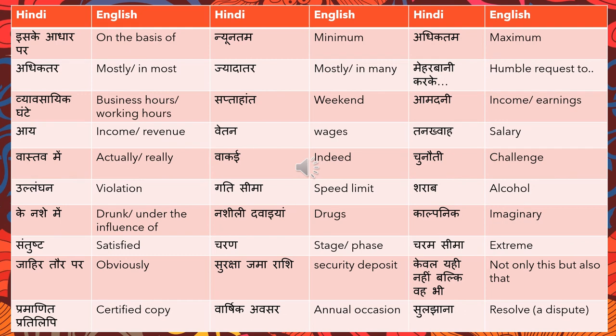Keval yehi nahi balki vahe bhi means not only this but also that. Pramanit pratilipi means certified copy — for example, for a loan they may ask: aapko apne passport ki ek pramanit pratilipi deni hogi, meaning you will have to submit a certified copy of your passport. Vaharshik means annual and avsar means occasion, so vaharshik avsar means annual occasion. Suljhana means to resolve, used in the context of resolving a dispute — maine unke beech ki ulajhan ko suljhaya means I resolved the confusion between them.